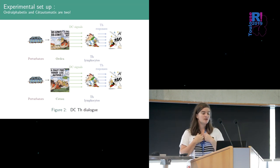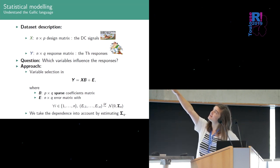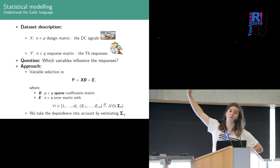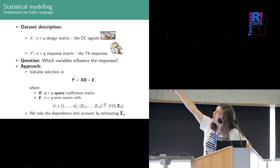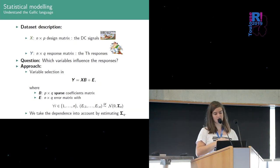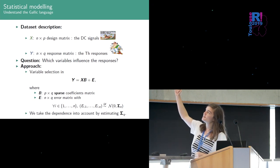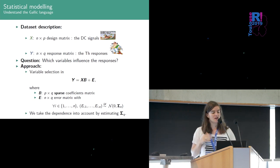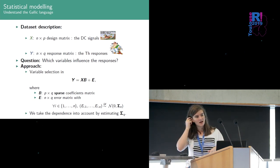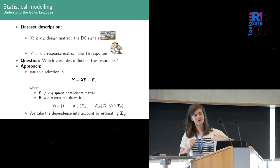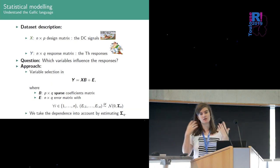To do that we will do statistical modeling so we have X which is a design matrix containing all the value of the DC signal for both of the dendritic cells and Y which is the response matrix containing the value of the Th responses and to link the DC signal to the Th responses we propose to perform variable selection in the multivariate linear model here so here B is a sparse coefficient matrix and E is an error matrix and our hypothesis is that each line of E are independent but the columns are not and we will want to take into account this covariance.